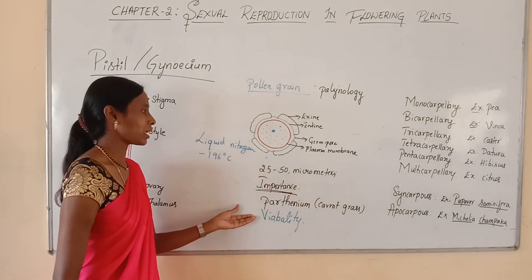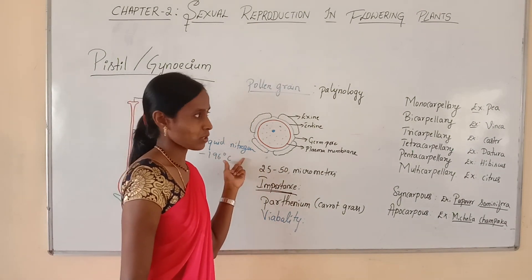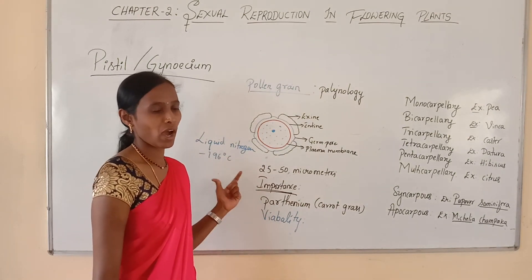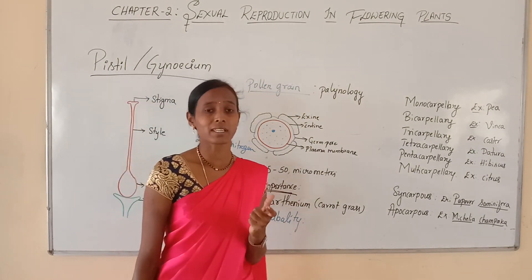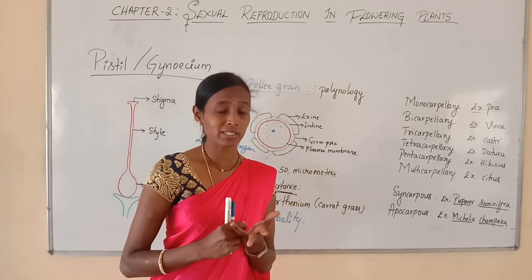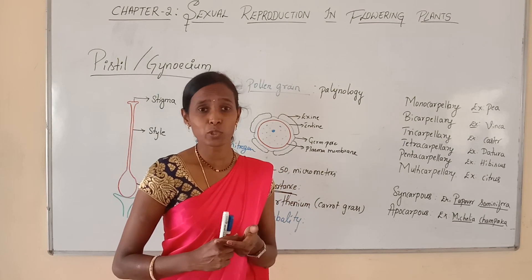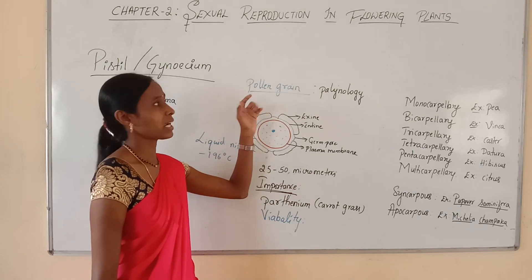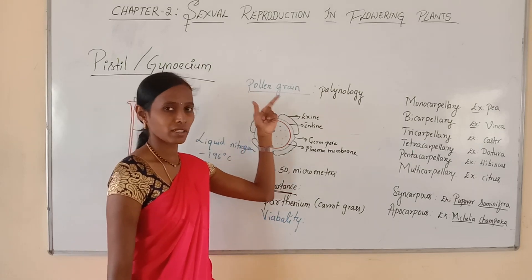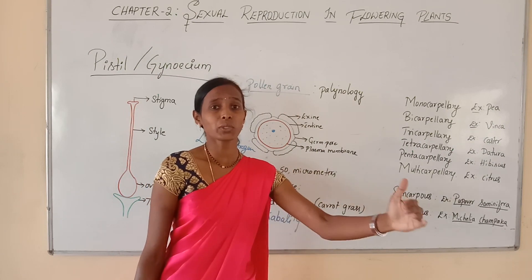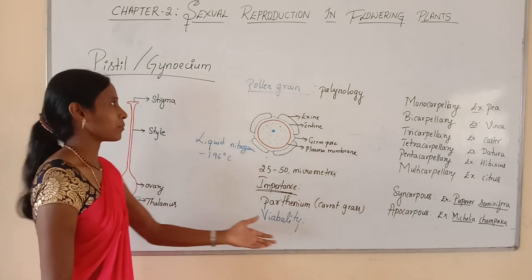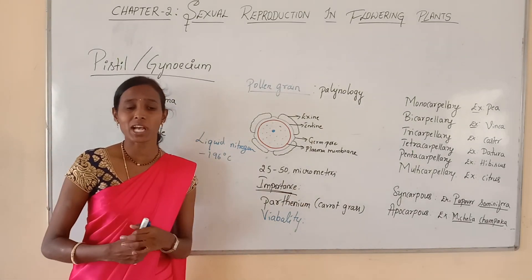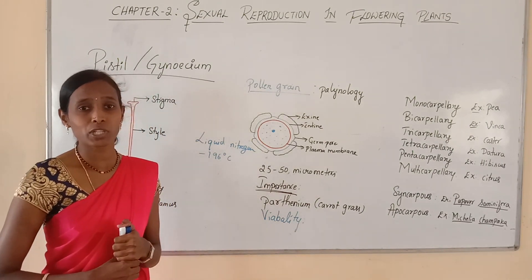So that covers the viability period of pollen grains, as well as the structure and importance of pollen grains — completing the male reproductive part of the flower. We have discussed the stamen, the structure of microsporangium, and the male gametophyte. Now we are moving on to the next whorl of the flower — that is the pistil or gynoecium.